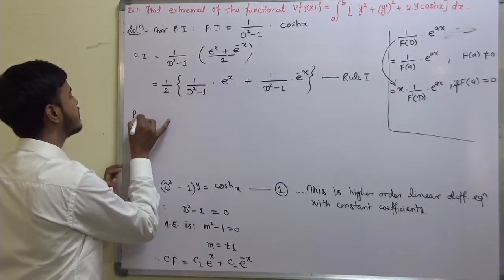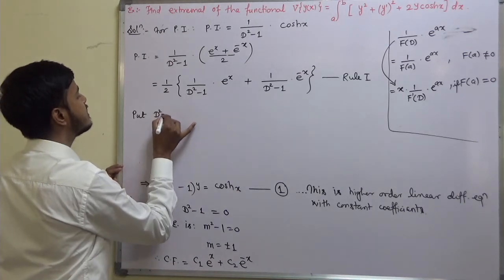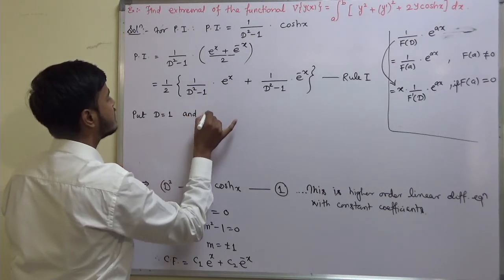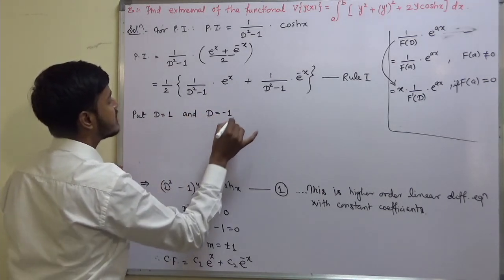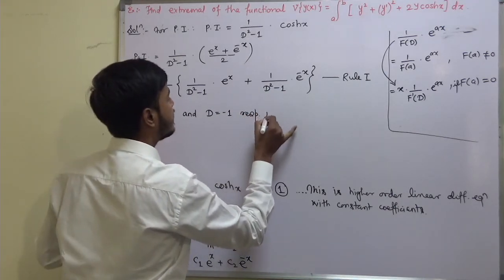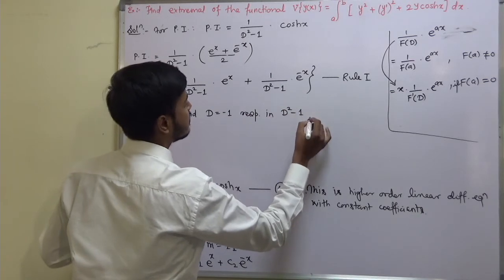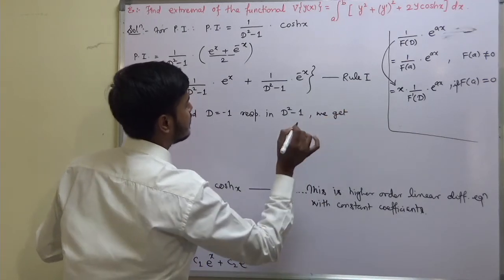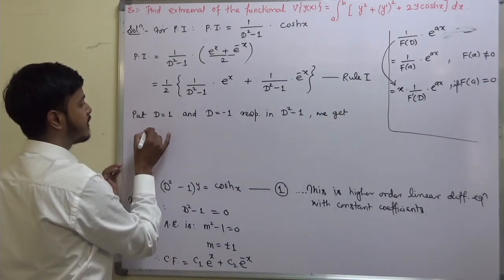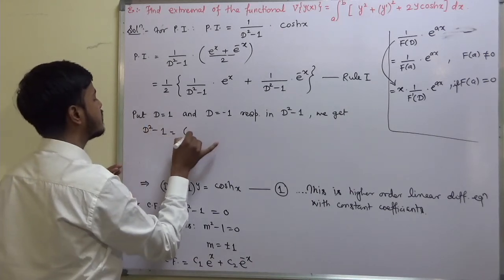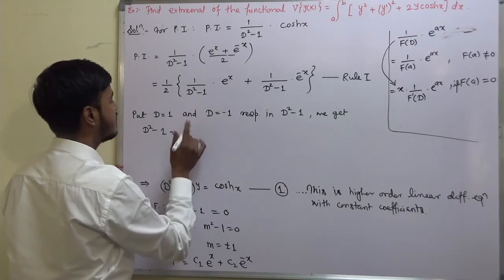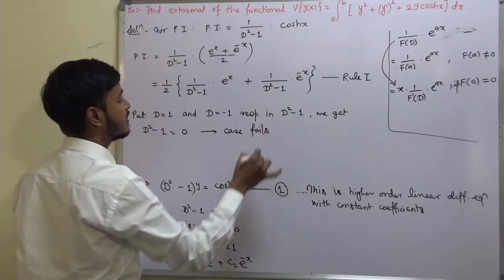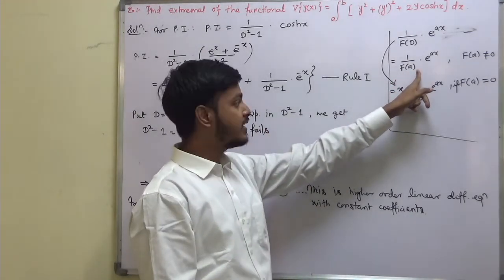Here, substituting D equal to 1 and D equal to minus 1 respectively into D-squared minus 1, we get 1 squared minus 1 equals 0 and (−1)² minus 1 equals 0. So the case fails for both terms and we cannot directly apply Rule 1.